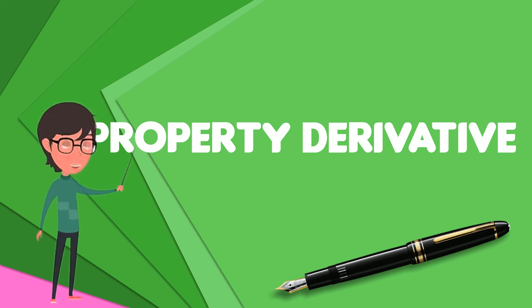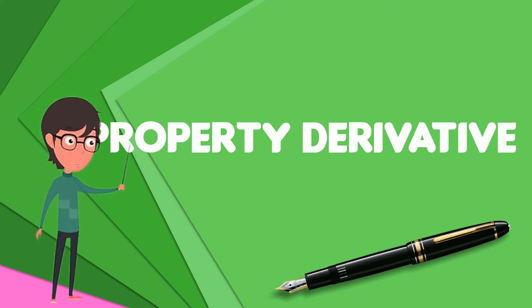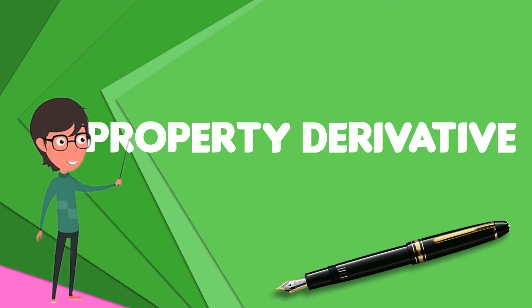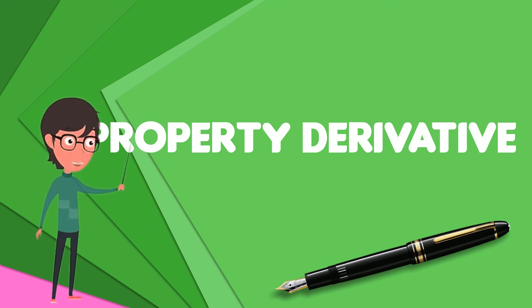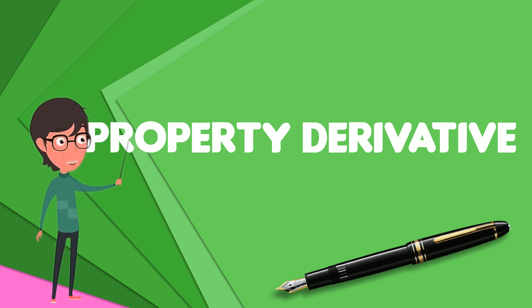There are two main residential real estate indices in the United States which trade: RadarLogix RPX, and the main index, S&P Case-Shiller Home Price Indices.